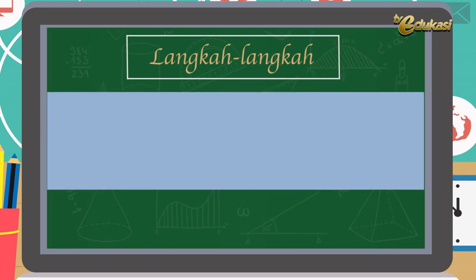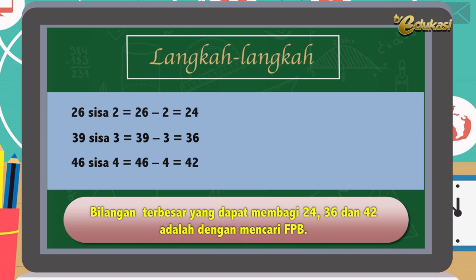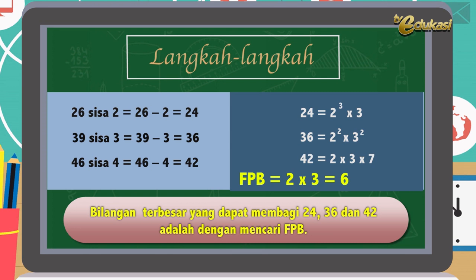Langkah-langkah: 26 sisa 2 sama dengan 26 dikurang 2 sama dengan 24. 39 sisa 3 sama dengan 39 dikurang 3 sama dengan 36. 46 sisa 4 sama dengan 46 dikurang 4 sama dengan 42. Bilangan terbesar yang dapat membagi 24, 36, dan 42 adalah dengan mencari FPB dari 24, 36, dan 42. 24 faktornya 2 pangkat 3 kali 3. 36 faktornya 2 pangkat 2 kali 3 pangkat 2. 42 faktornya 2 kali 3 kali 7. Jadi FPB-nya adalah 2 kali 3 sama dengan 6.